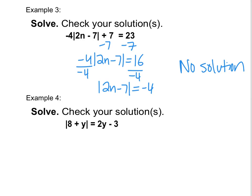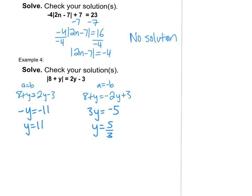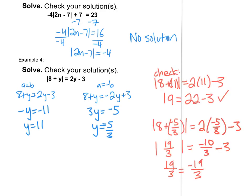In the next example, I need to split this into two cases. One where a equals b, which means I have 8 plus y equals 2y minus 3. And the other one where a equals negative b — my left side stays the same, but I take the opposite of every term on the right side. Solving each, I get y equals 11 and y equals negative 5 over 3. Checking each: the first equation is true, but the second gives 19 over 3 equals negative 19 over 3, which is false. That means negative 5 over 3 is an extraneous solution, so our only solution is y equals 11.